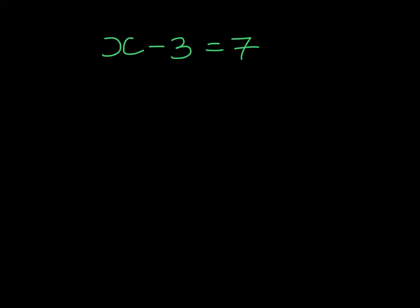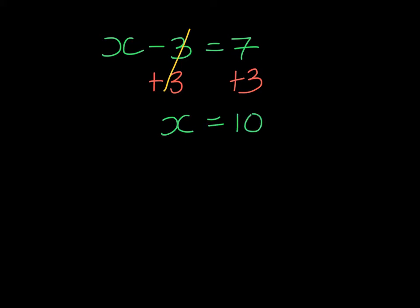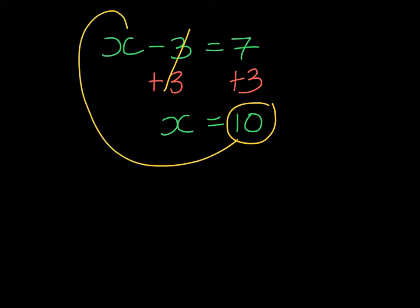Here's our next example. If we look, we are subtracting 3 from X. So we're going to do the inverse of that, which is to add 3 to both sides. On the left-hand side, if I subtract 3 then add 3, that's going to cancel. I'm left with X on the left-hand side, and on the right-hand side, 7 and 3 is 10. At this point, we can take 10, substitute it into the original equation, and see if 10 take away 3 gives me 7, and we see it does, so we've solved it correctly.